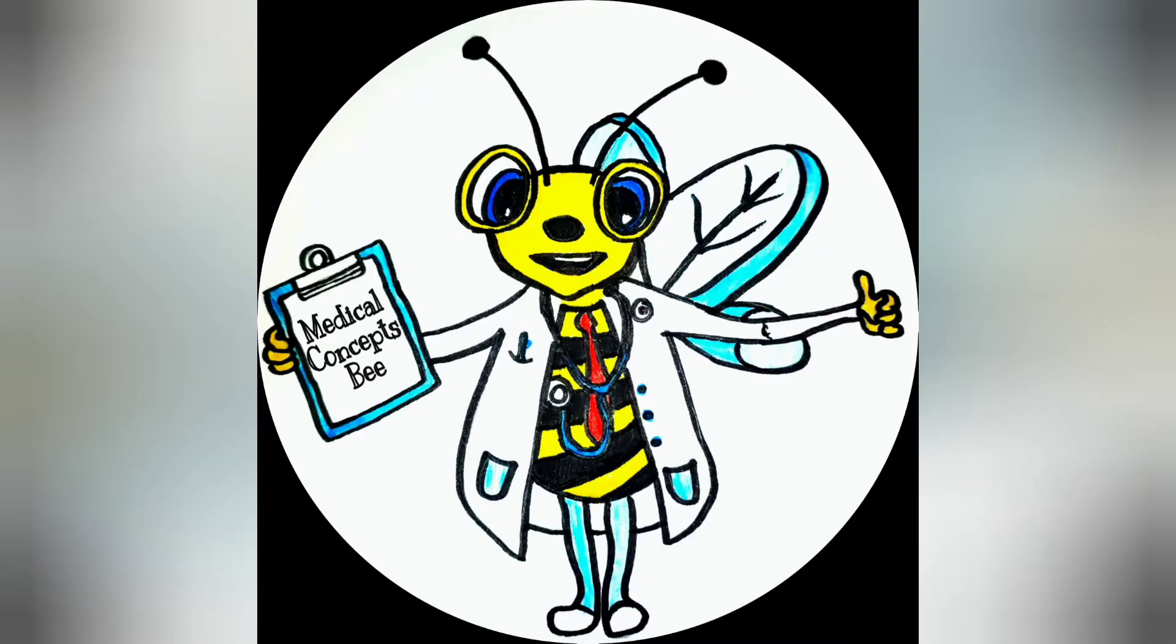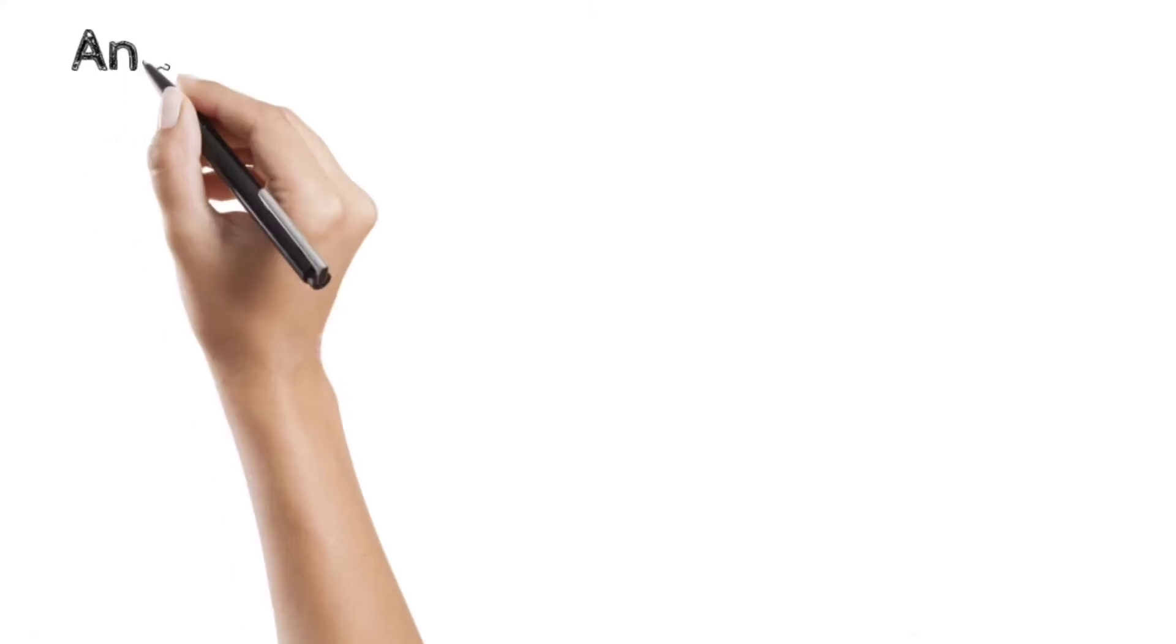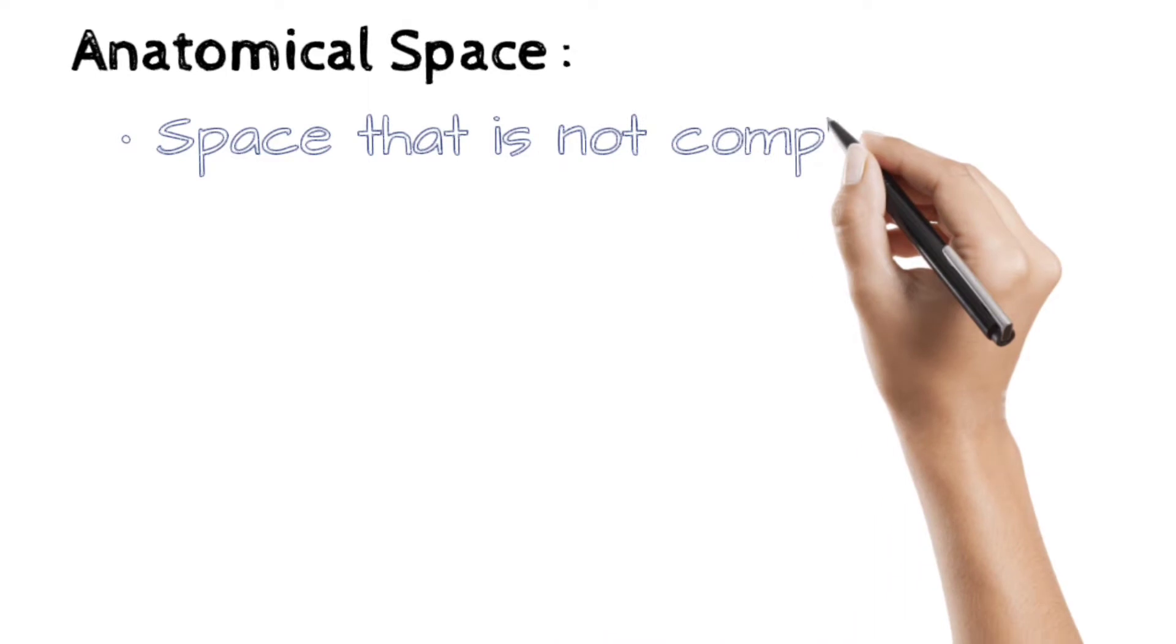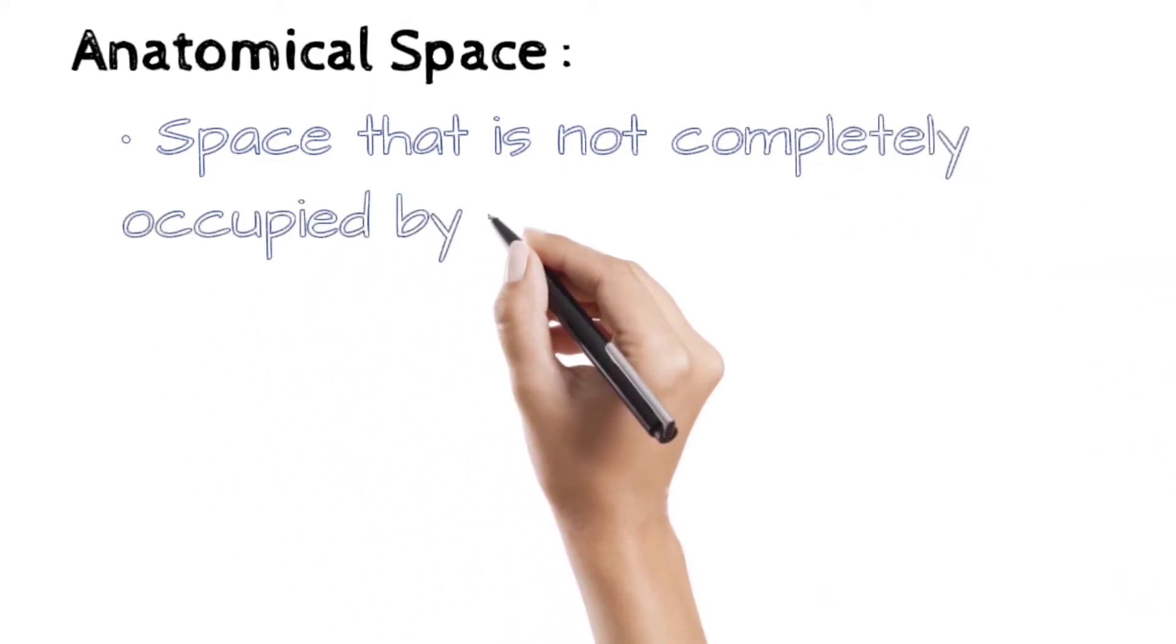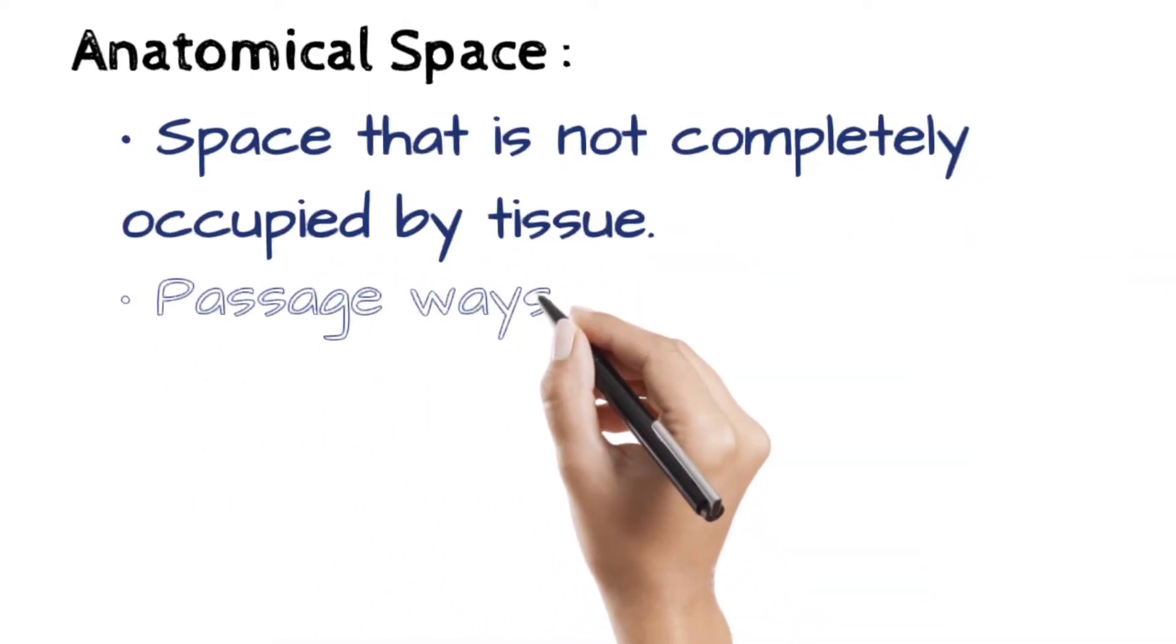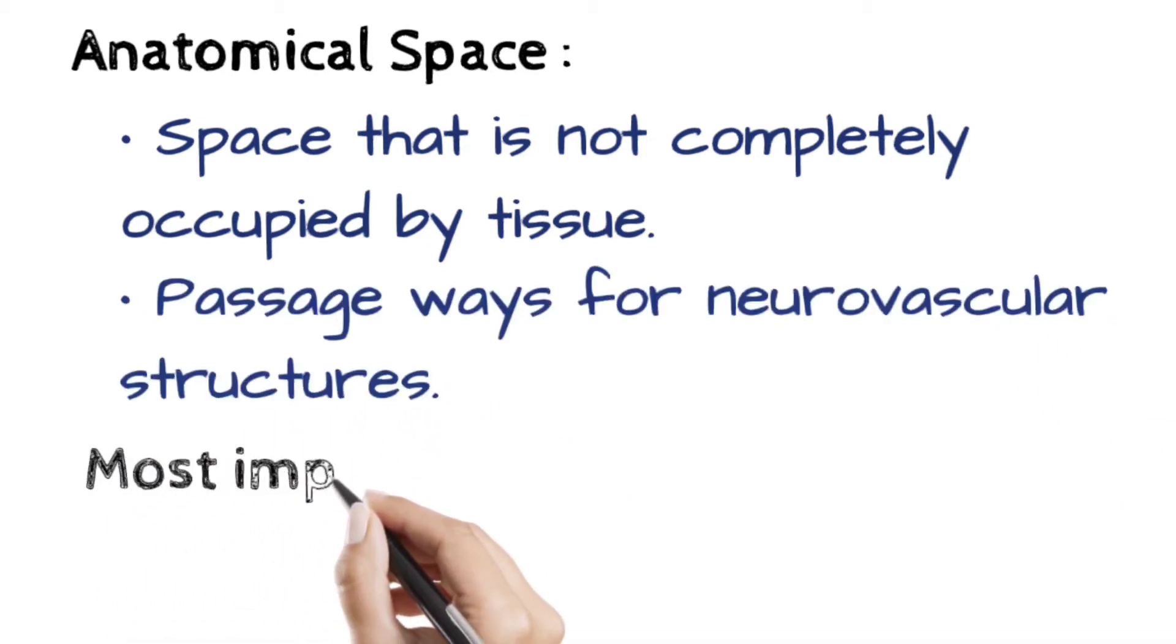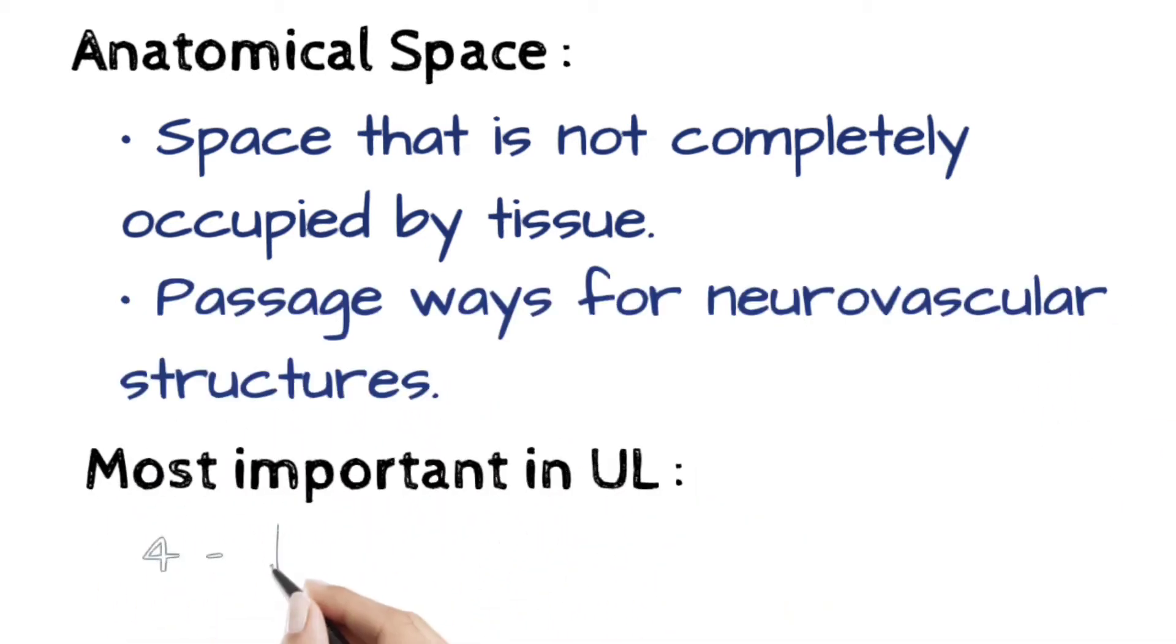Hey guys, welcome back again. In this video we are going to learn about intermuscular spaces. Anatomical space is any space that is not completely occupied by tissue. These act as passageways for neurovascular structures to pass through it. Most important in upper limb are four which are discussed here.